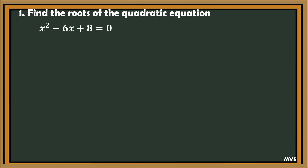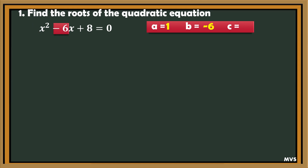Find the roots of the quadratic equation x squared minus 6x plus 8 is equal to zero. First, determine the value of a, b, and c. a is 1, b is negative 6, and c is 8. We are going to use the AC method by using the value of a, b, and c.